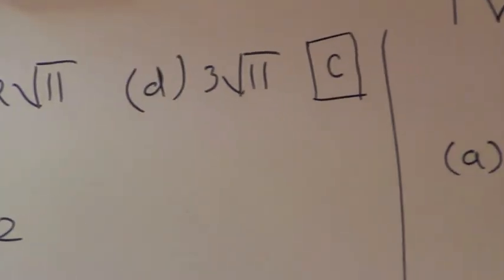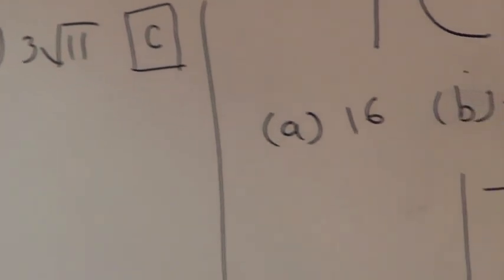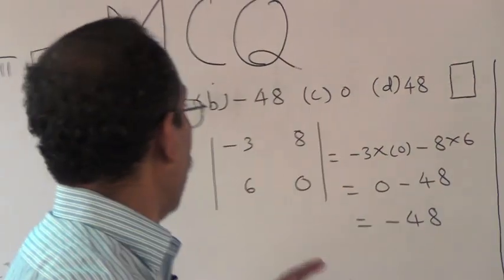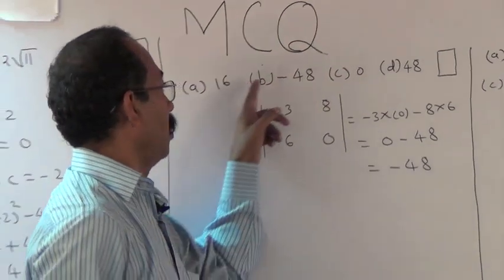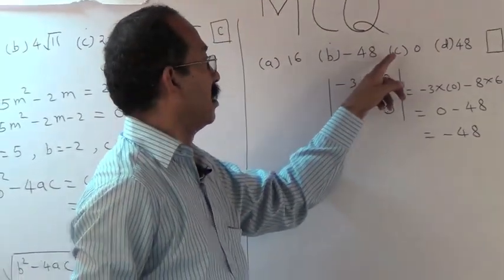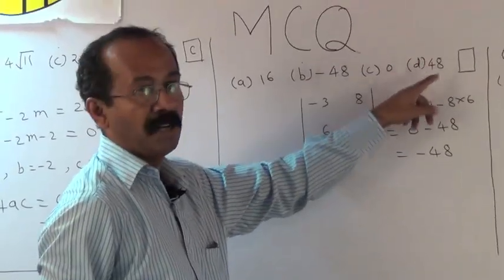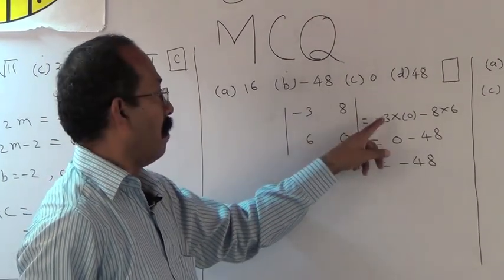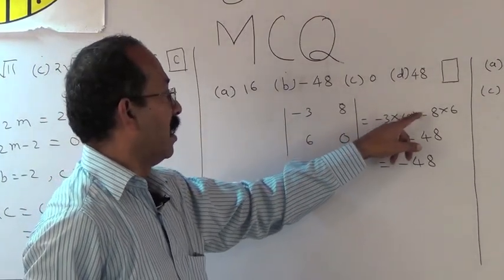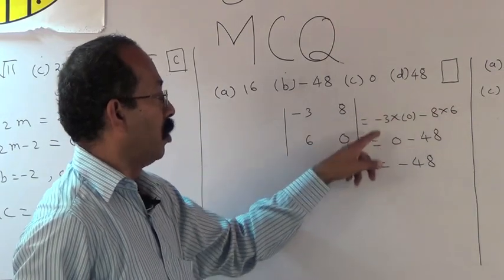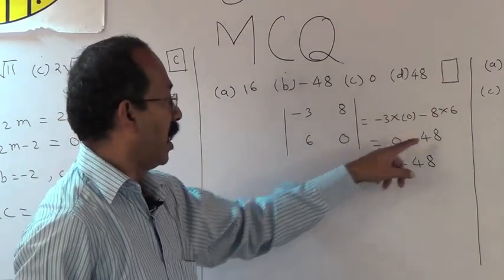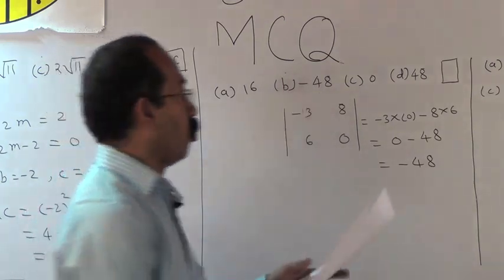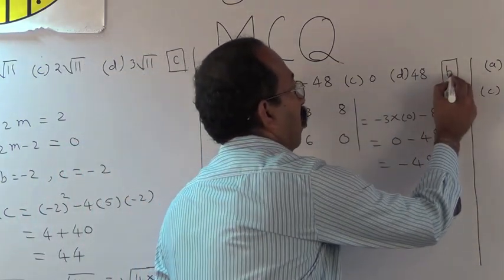Next: find the value of the determinant |−3, 8; 6, 0|. The alternatives are a) 16, b) −48, c) 0, d) 48. After cross multiplying: (−3)(0) − (8)(6) = 0 − 48 = −48. The final answer is −48, and alternative b represents −48. So b is the correct alternative.